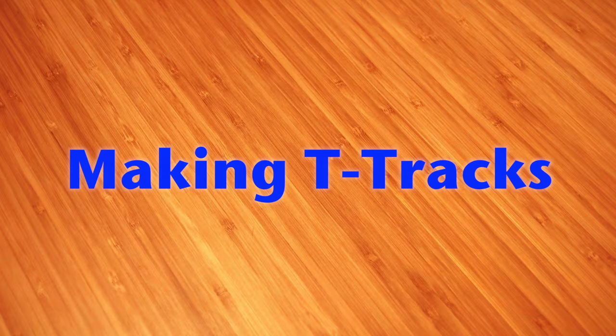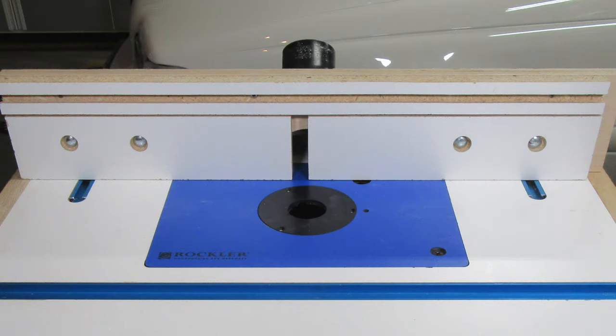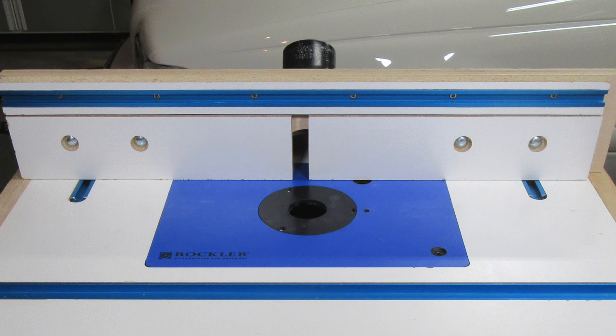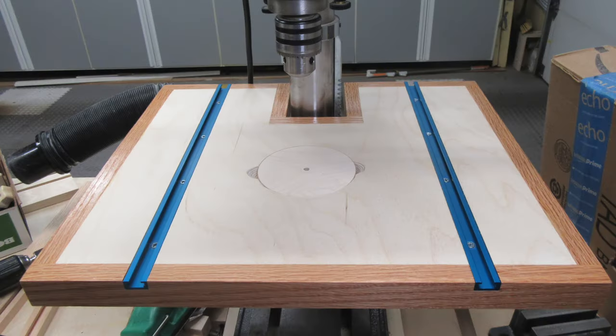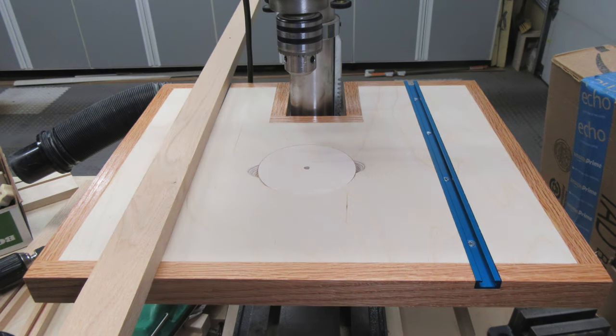The one problem with cutting my own T-slots is that I don't like how they look. They're okay, not horrible, but they're just kind of blah. I prefer the contrasting colors that come with using real T-tracks, like this. I've been working on my new drill press table, and I like the look of the red oak edging I'm using, so I'm going to try and make my own T-tracks out of this same red oak.